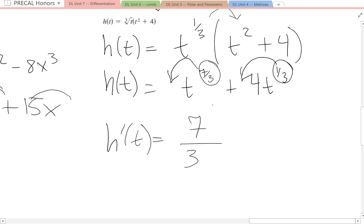You should have seven-thirds t to the... Now take seven-thirds and subtract one, which is three-thirds, so you're left with four-thirds. Plus four times one-third is four-thirds. So four-thirds times t to the one-third minus one or minus three-thirds is negative two-thirds.